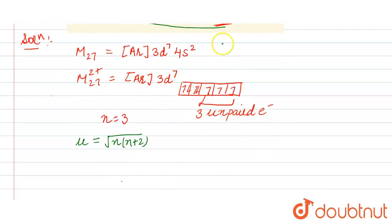Put n's value in this formula: √(3(3+2)) = √15. After calculating, 3.87 Bohr magneton BM.